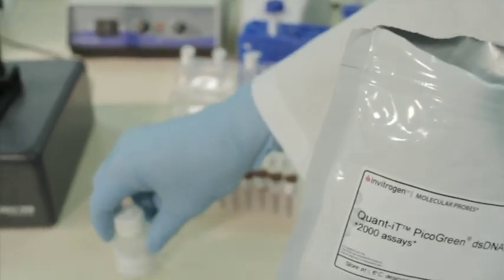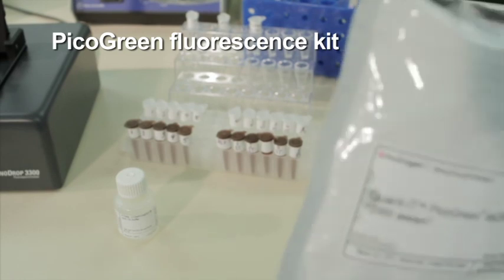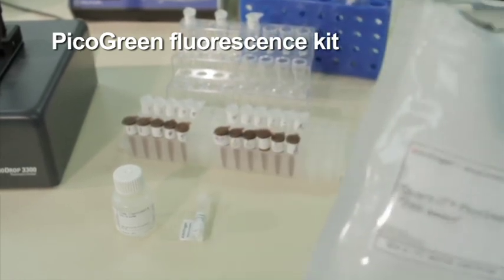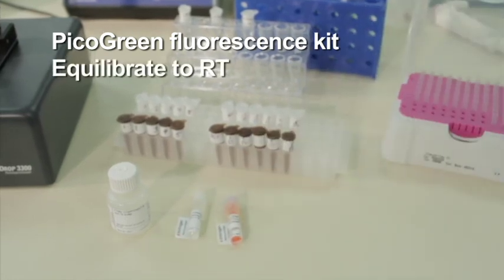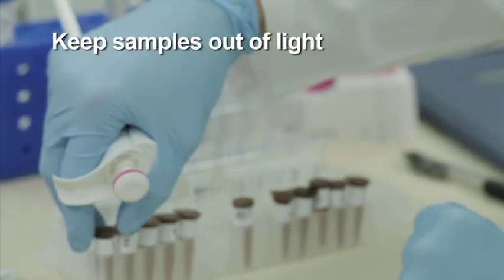To demonstrate high-sensitivity microvolume nucleic acid quantitation using the NanoDrop 3300, a pico-green fluorescence kit is used. To begin, equilibrate the kit's standards and all nucleic acid samples to room temperature. Fluorescence samples are light-sensitive and should be kept in amber or aluminum-wrapped tubes.